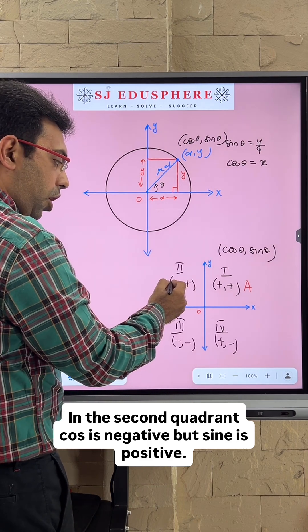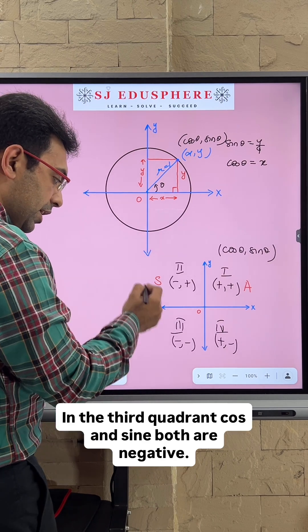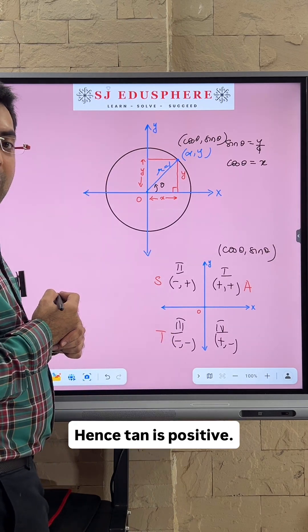In the second quadrant, cosine is negative but sine is positive. In the third quadrant, cosine and sine are both negative, hence tangent is positive.